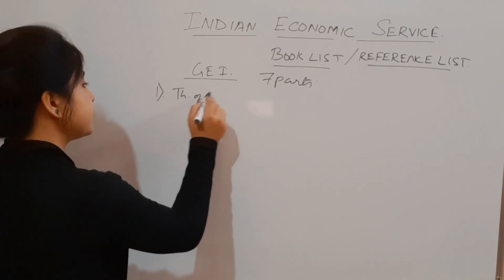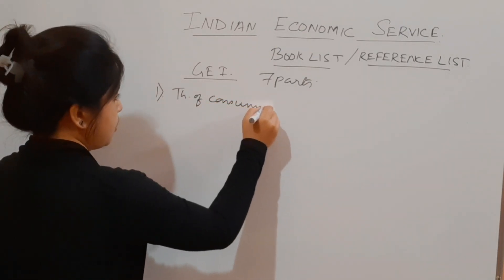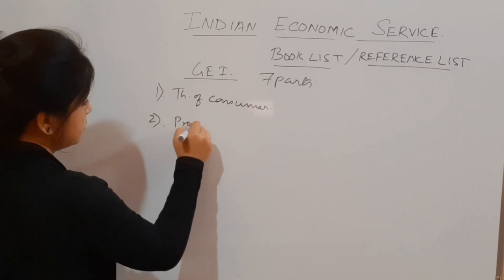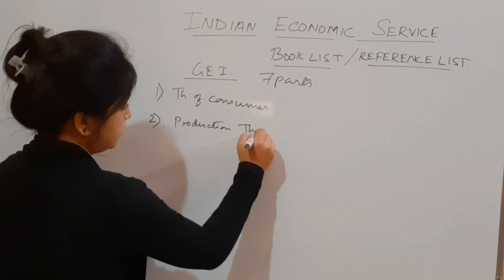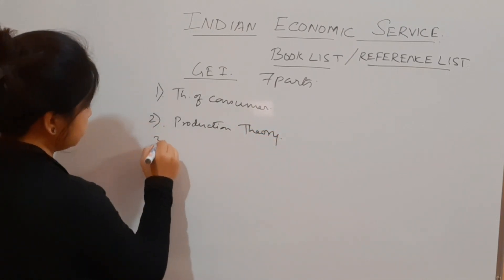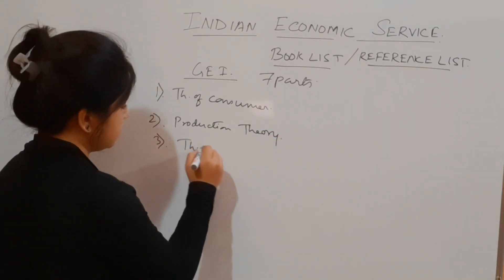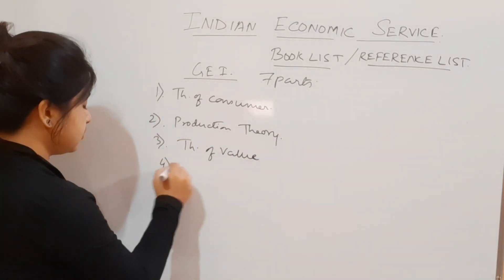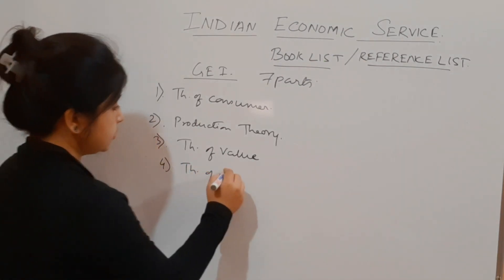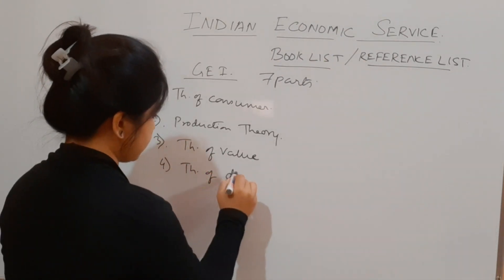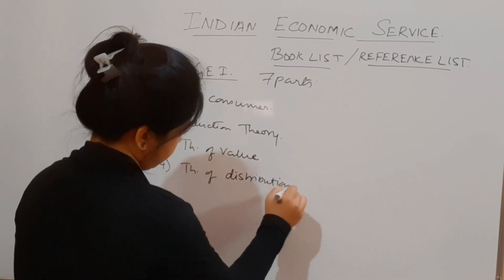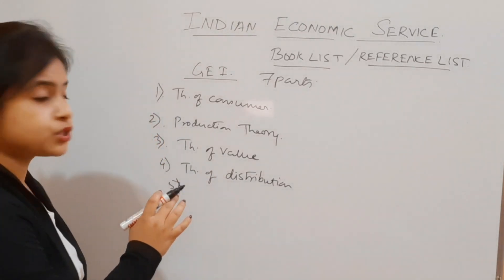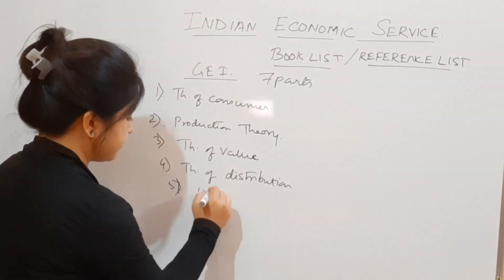The five microeconomics parts are: number one, Theory of Consumer (Consumer Theory); number two, Production Theory; number three, Theory of Value; number four, Theory of Distribution; and number five, Welfare Economics.